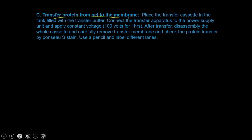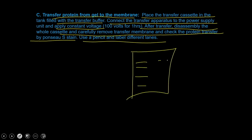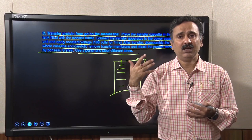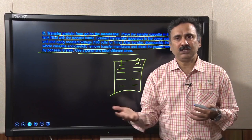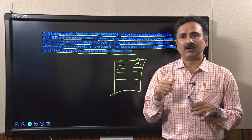Connect the cassette to the power supply to allow transfer of proteins from gel to nitrocellulose membrane. After transfer, disassemble the cassette, carefully remove the membrane, and check the transfer by Ponceau stain. Use a pencil to label the different lanes so they can be identified during chemiluminescent development or autoradiography.